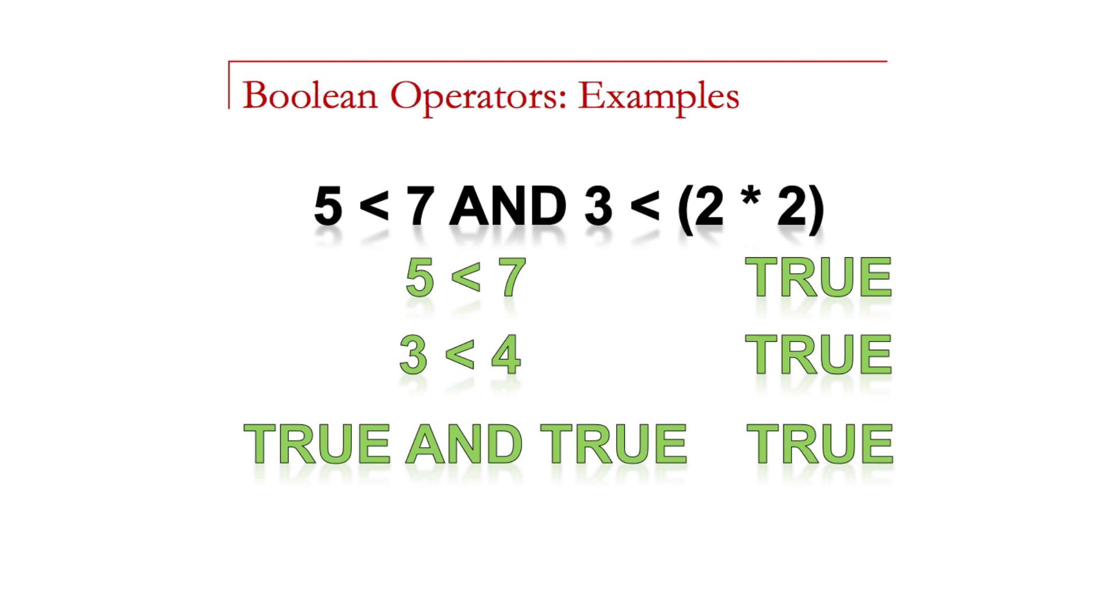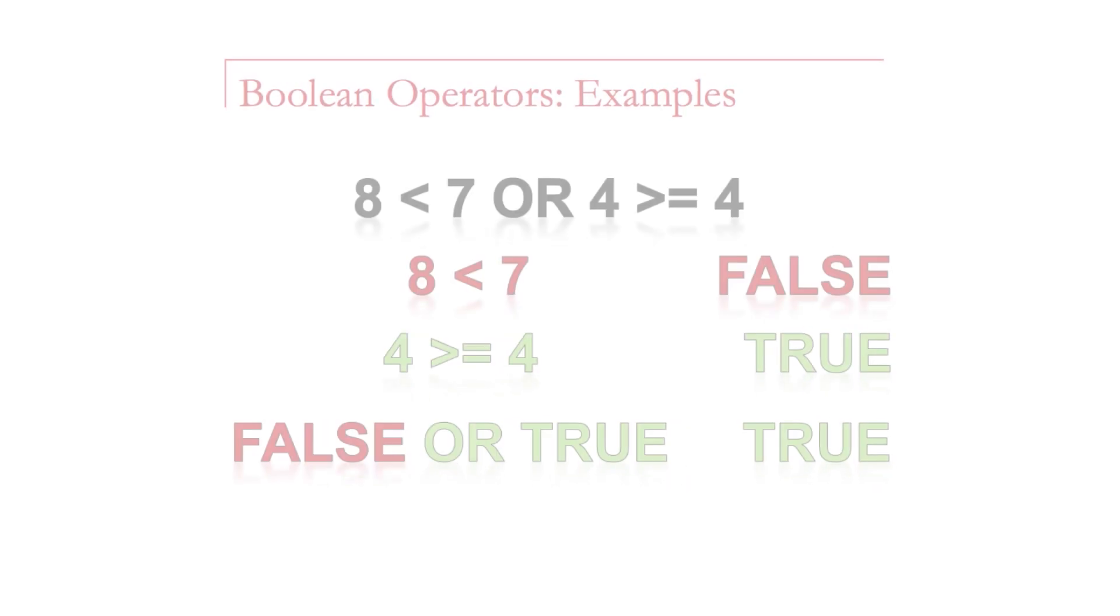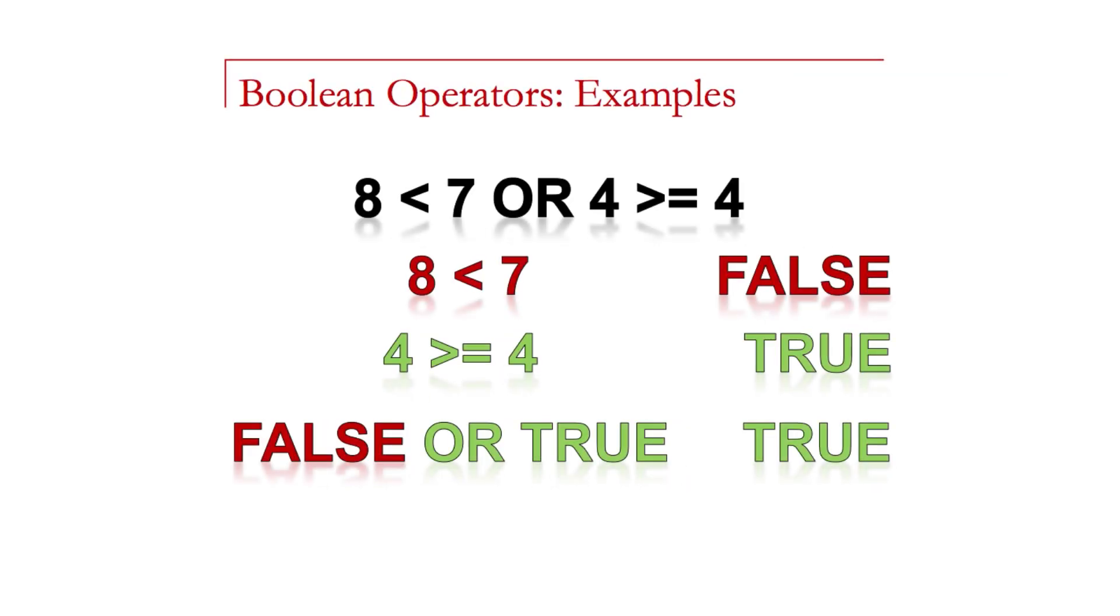If you look at this particular Boolean expression, five is less than seven is true. And then we have the sub-expression three is less than two times two. So three is less than four is true. So really what we have is true and true and the overall result of this expression is true. Here's another sub-expression: eight is less than seven, that's false. But four greater than or equal to four is true. So I have false or true. So with the OR, if either one of the expressions is true, the whole thing is true.